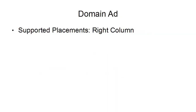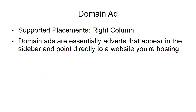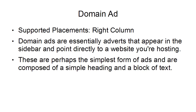Then there's a domain ad. The supported placement is in the right column. Domain ads are essentially adverts that appear in the sidebar and point directly to a website that you're hosting, similar to a Google AdSense ad. They are perhaps the simplest form of ads and are composed of a simple heading and a block of text.